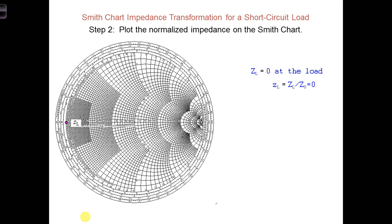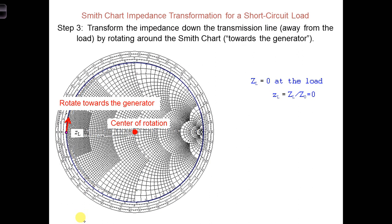For step three, we want to rotate the impedance dot we just marked, and we want to rotate it down the transmission line, which corresponds to a circle of constant radius centered at the center of the Smith chart. So, whenever you're rotating, I've seen lots of different kinds of rotations that are incorrect, you always want to rotate around this dot right in the middle along a constant radius.